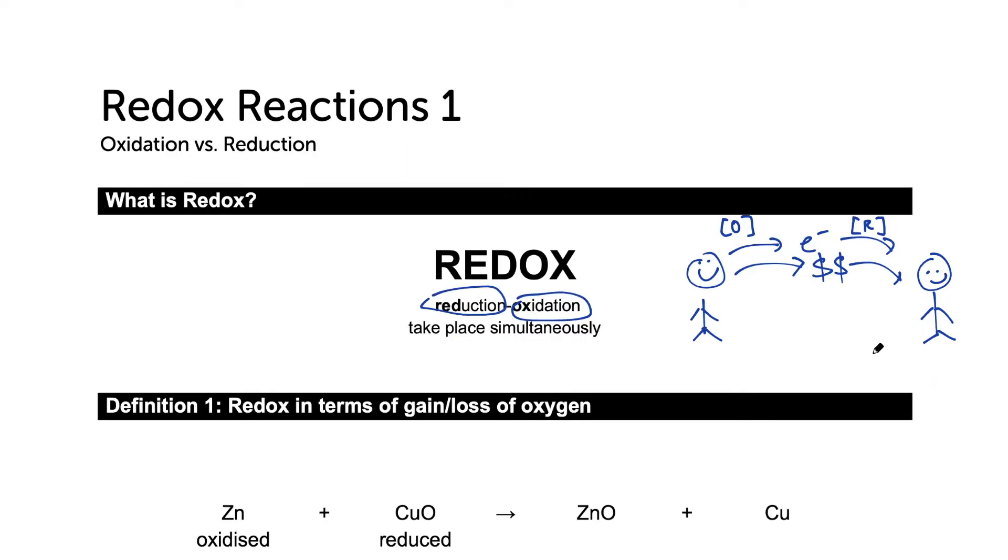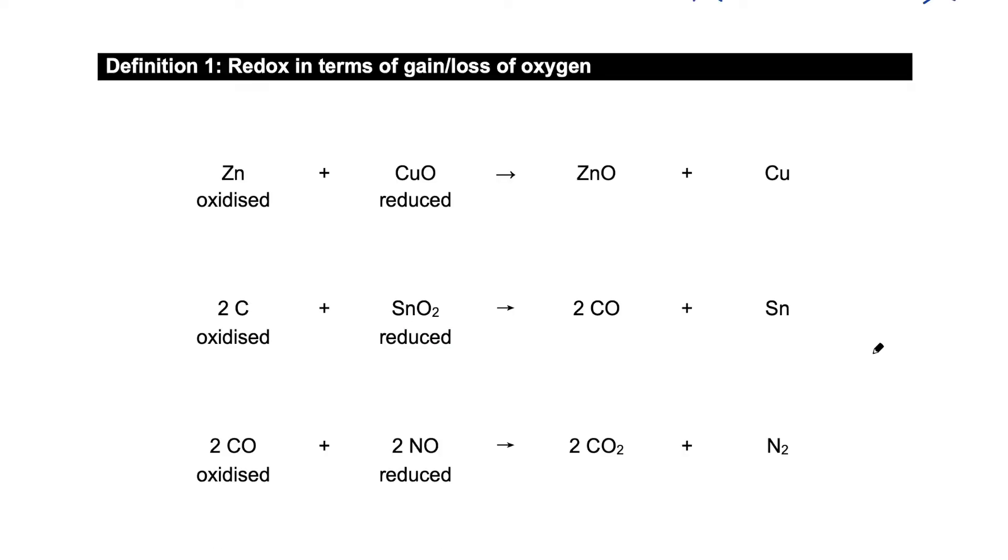Now we're going to take a look at some examples of some redox reactions and use different rules to decide what substance is being oxidized and what substance is being reduced. There are four main ways we can look at redox reactions, and we're going to go through each method one by one. In the first method, we are going to focus on oxygen.